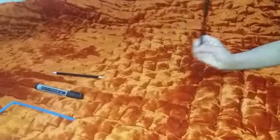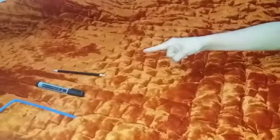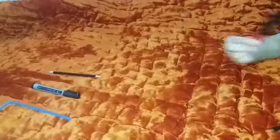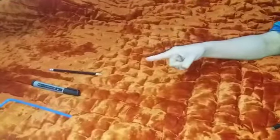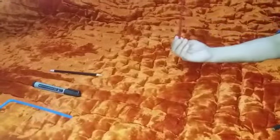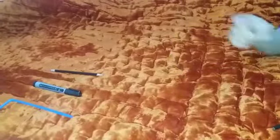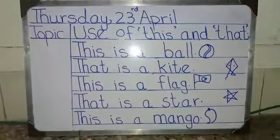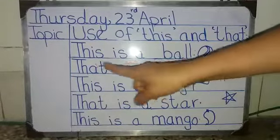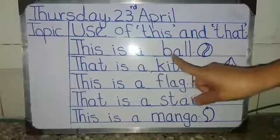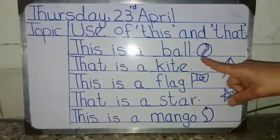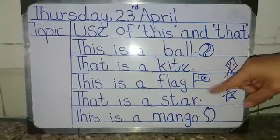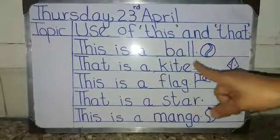For example: this is a pencil, that is a pencil. This is a marker, that is a marker. This is a straw, that is a straw. Now look at the board — this is a ball. Look here: this is a ball, that is a kite.